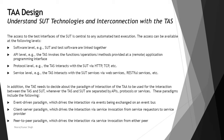As we understand from previous tutorials in this chapter, there are four different levels or layers where we generally have to manage things and create milestones — software level, API level, protocol level, and service level — where we need to understand automated test execution. In addition, the TAA needs to decide about the paradigm of interaction to be used between the TAS and the SUT. Whenever the TAS and SUT are separated by APIs, protocols, or services, this needs to be implemented.